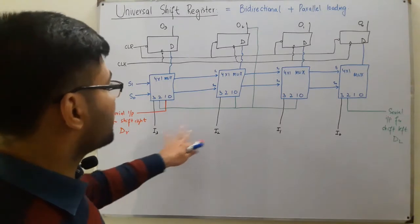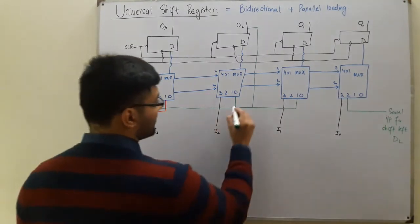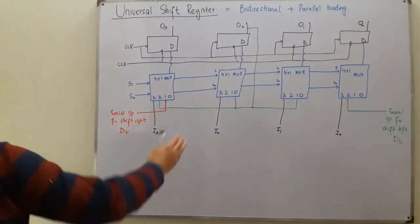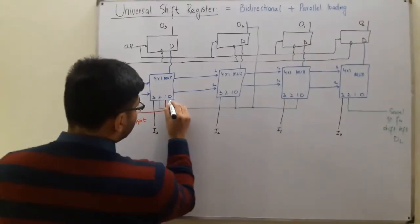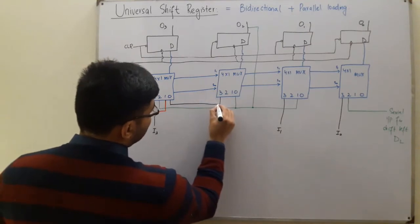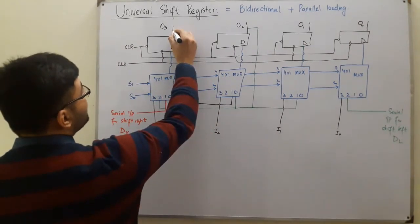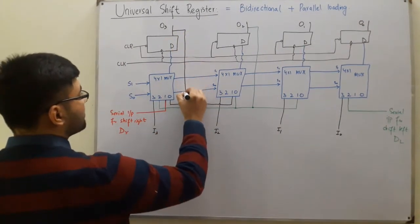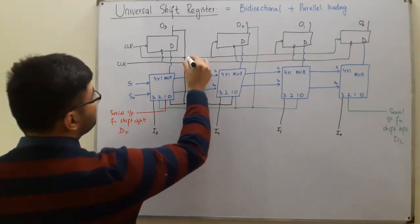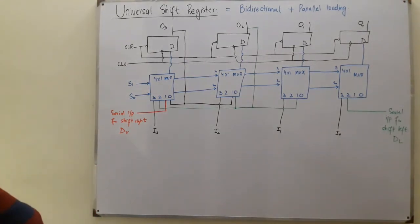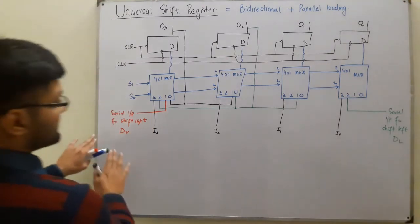Now for input 0 and the interconnections: output O2 is connected to inputs 1 and 0 of adjacent multiplexers. Input 0 of one multiplexer is connected to input 1 of the next, and it is taken from output O3. So input 0 is connected to 1, and it's given from O3.